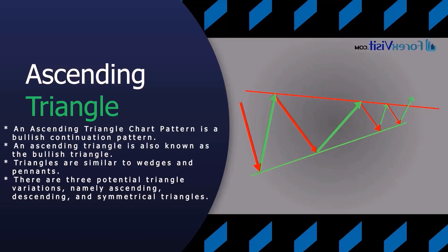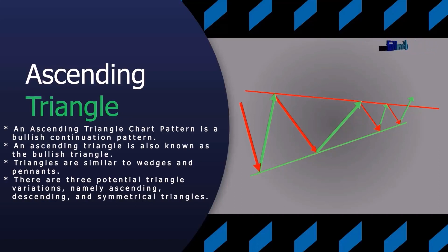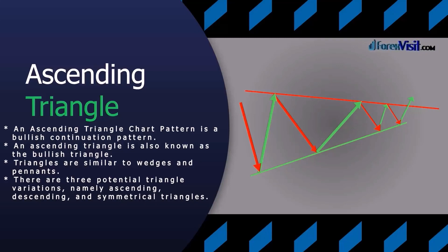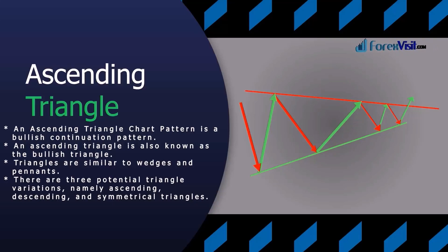If both lines were extended right, the ascending trend line could act as the hypotenuse of a right triangle. If a perpendicular line were drawn extending down from the left end of the horizontal line, a right triangle would form.